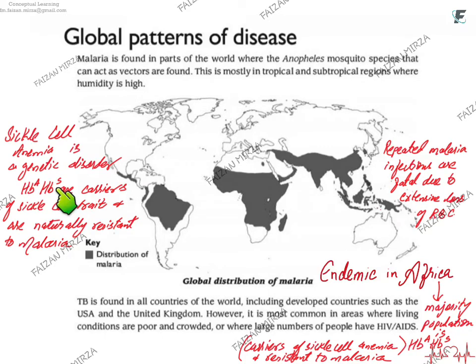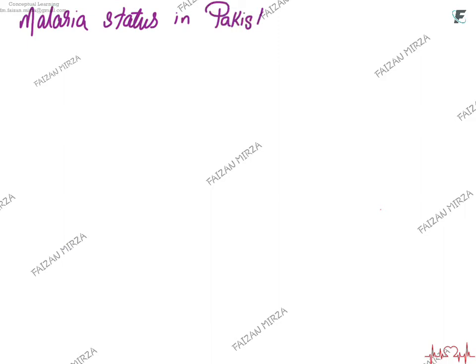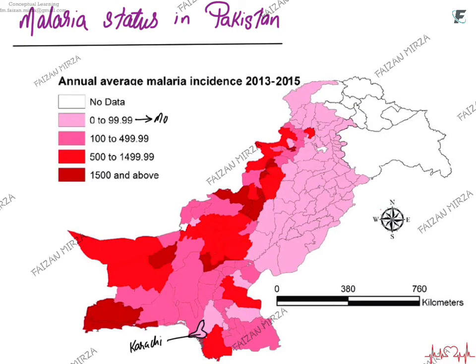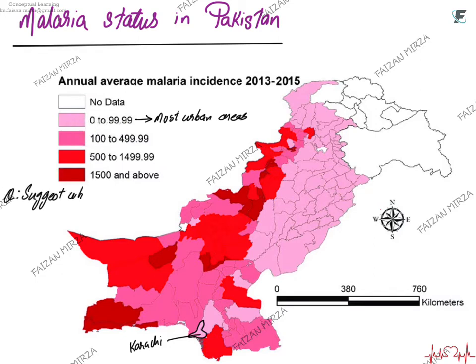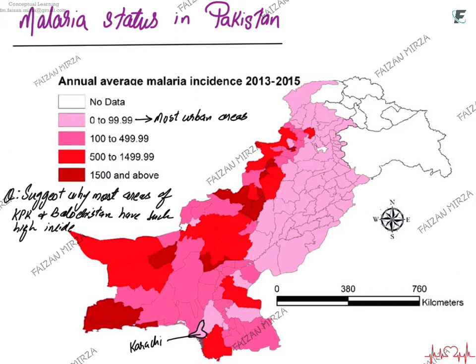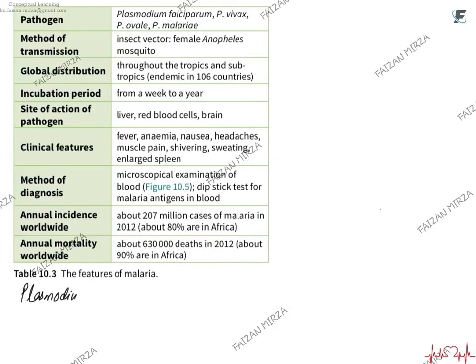This is a significant achievement because of the HbS allele, which has helped people fight back this infectious disease. Looking at the status of malaria in Pakistan, most urban areas such as Karachi are shaded in a lighter shade, showing lower prevalence. However, less developed regions — most notably Balochistan and KPK — show a high incidence of malaria.